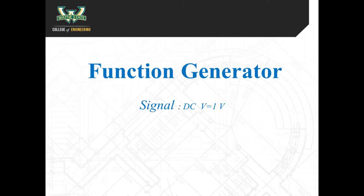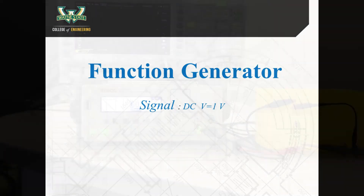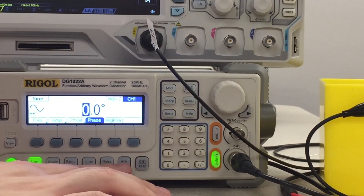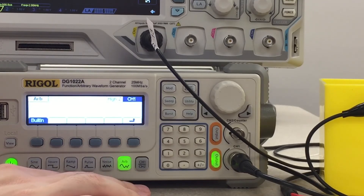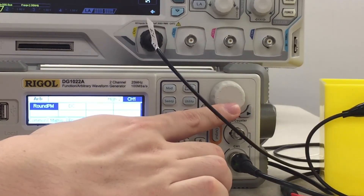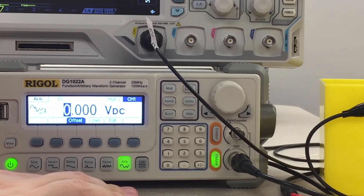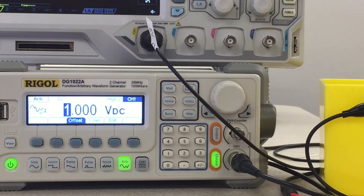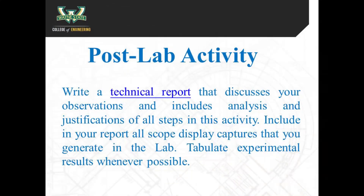Please refer to the following steps to generate a DC voltage. Press the ARB key, then select load function, then select the built-in function and choose the DC voltage function. Set the DC value and press the VPP value.